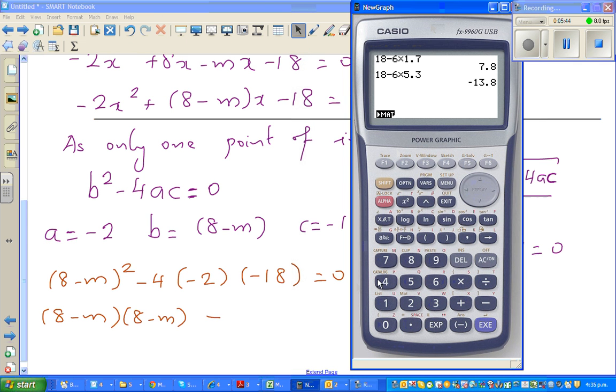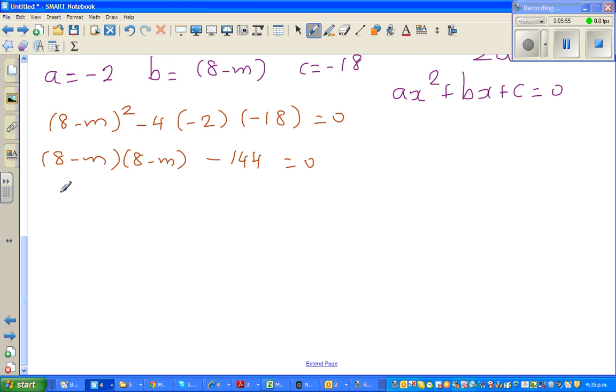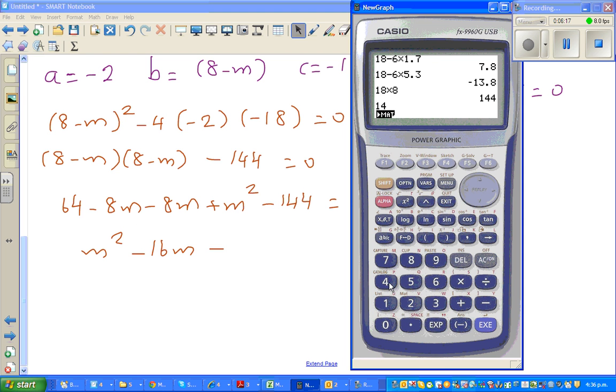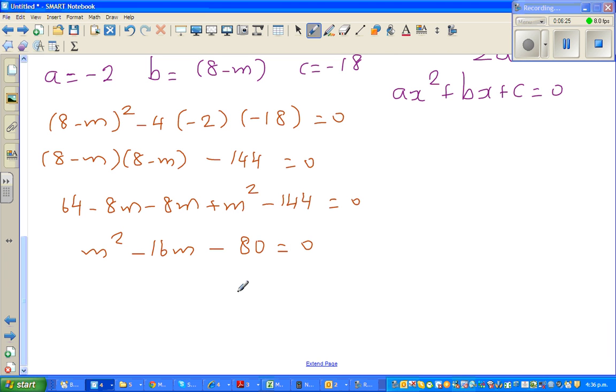So if you expand this, this is 64 minus 8m minus 8m plus m squared minus 144 is equal to 0. So now you can write m squared minus 16m, minus 8m, and 144 minus 64. It's always good to use a calculator, minus 80 is equal to 0. Now this can be factorized with two factors of 80 which gives you 20 and 4. So this is m minus 20 times m plus 4 is equal to 0. So you get m is 20 or m is minus 4.